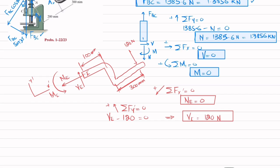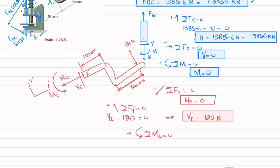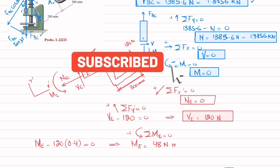For the moment, we apply sum of all moments about point E equals zero, taking counterclockwise as positive. The moment ME is counterclockwise, so it is positive. The 120 N force with perpendicular distance 400 mm produces a clockwise moment, so it is negative. Writing the equation: ME minus 120 × 0.4 equals zero, giving ME equals 48 N·m.